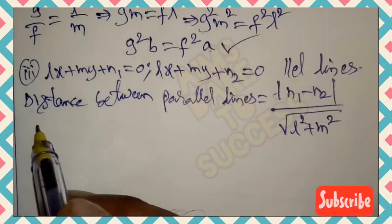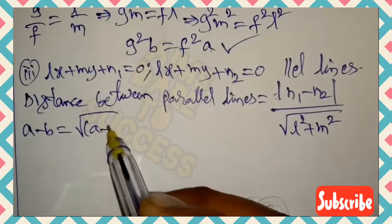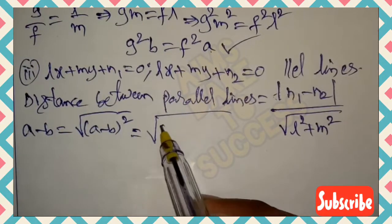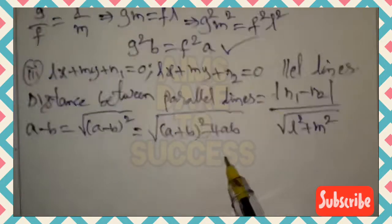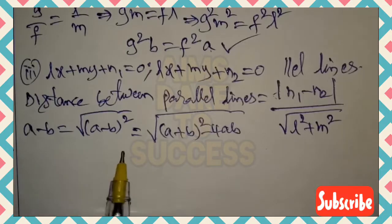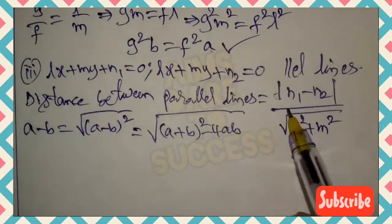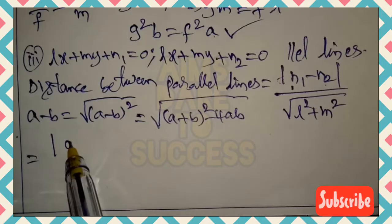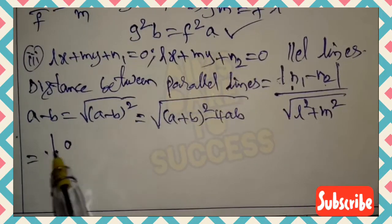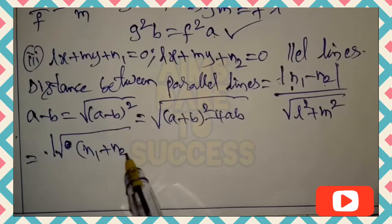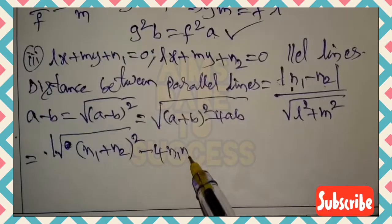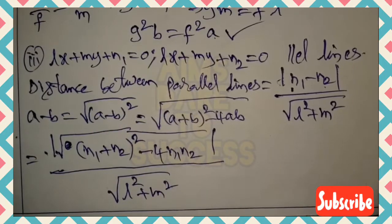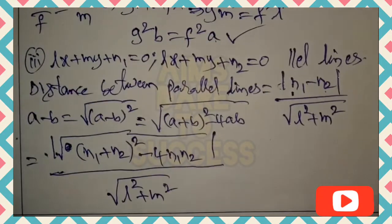We can write |n₁ − n₂| as √[(n₁−n₂)²], and using the identity (a−b)² = (a+b)² − 4ab, we replace it with √[(n₁+n₂)² − 4n₁n₂]. So the distance becomes √[(n₁+n₂)² − 4n₁n₂] / √(l²+m²), which equals √[(n₁+n₂)² − 4n₁n₂] / √(l²+m²).